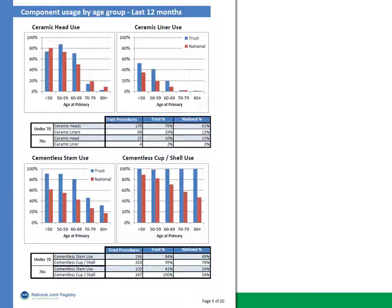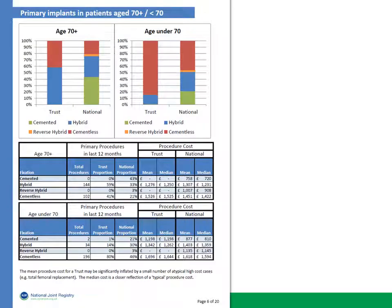We then look at the use of ceramics in this trust in comparison to the national picture. Here we also introduce patient age bands to look at the extent to which trusts vary clinical practice for different patient groups. That theme is carried into the next page, where we also introduce implant pricing, showing the mean and the median trust prices for implants across different types of procedures, segmented by patients above and below the age of 70.